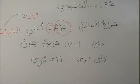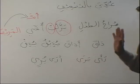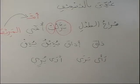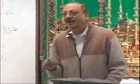Now for Ara — maadi: Ara, Arat, Arata, Arayna, Arayta, Araytuma, Araytum, Arayti, Araytuma, Araytunna, Araytu, Arayna. Araytu — I showed; Arayna — we showed. Remember: to see and to show. Now let's do yuri: yuri, yuriyani, yuruna, turiyani, yurina, Anta turi, turiyani, turuna, turina, turiyani, turina. Then uri, nuri inshallah.